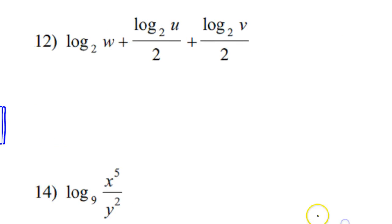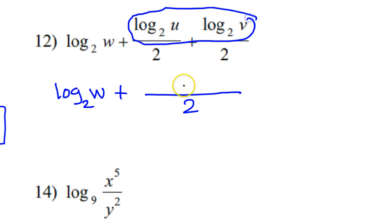All right similarly with number twelve these two are the same denominator. Okay so I can put these together and I'll have log base 2 of w plus now I'm just going to put these two together so I've got my like denominator but when I add these two together I can condense these down if I do log base 2 of uv. Addition becomes multiplication.